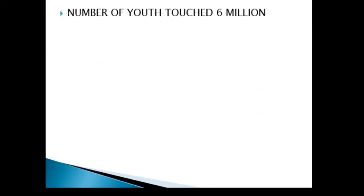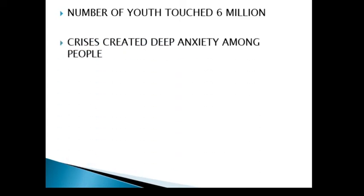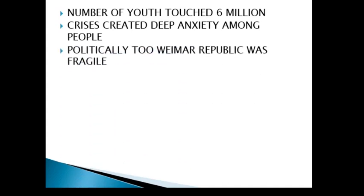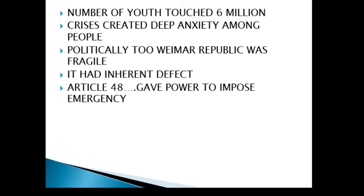The number of unemployed youth touched 6 million in Germany. The crisis created deep anxiety among people. Politically too, the Weimar Republic was fragile and it did not help the people of Germany to overcome such a situation. Article 48, which gave the president the power to impose emergency in Germany, did not help. The cabinet was changed 20 times and people lost all confidence in the parliamentary system of Germany.